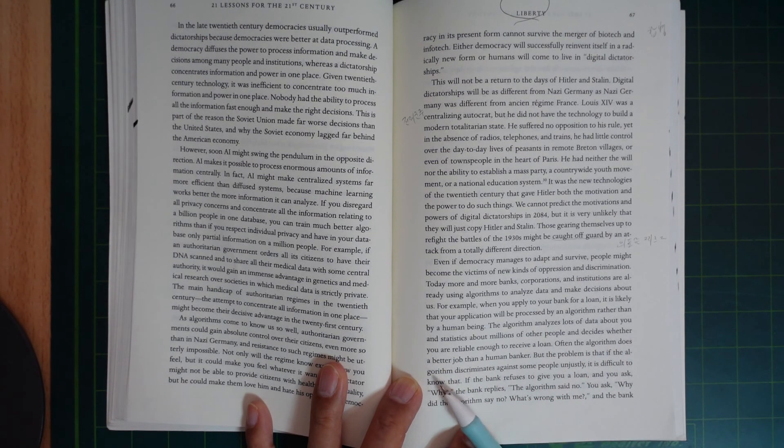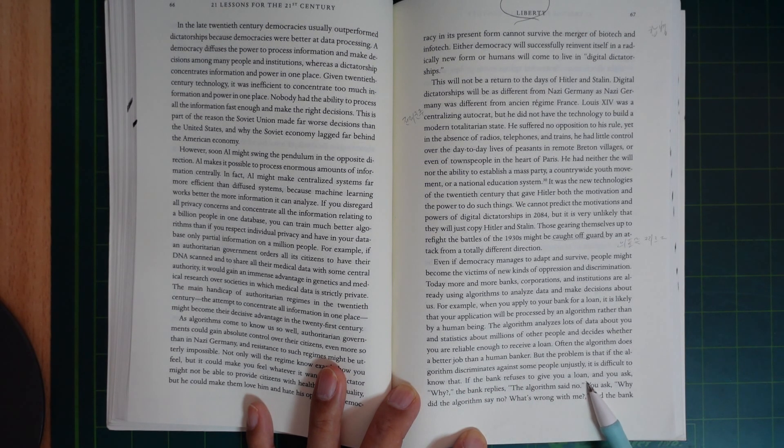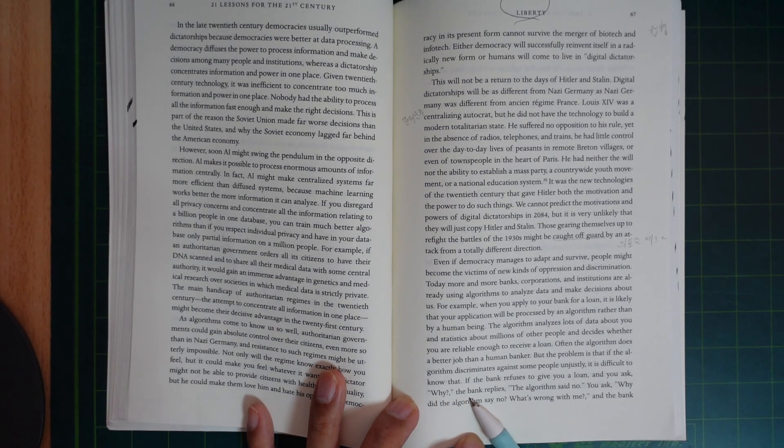But the problem is that if the algorithm discriminates against some people unjustly, it's difficult to know that. If the bank refuses to give you a loan and you ask why, the bank replies: the algorithm said no.